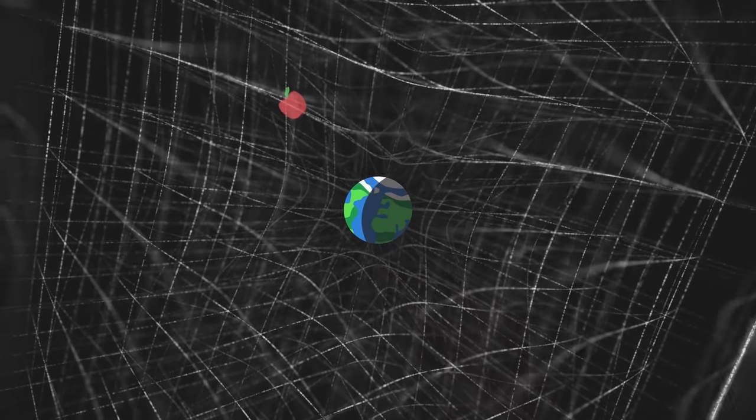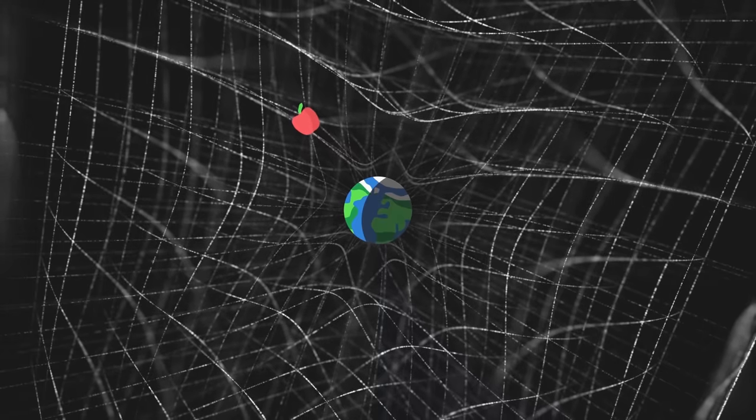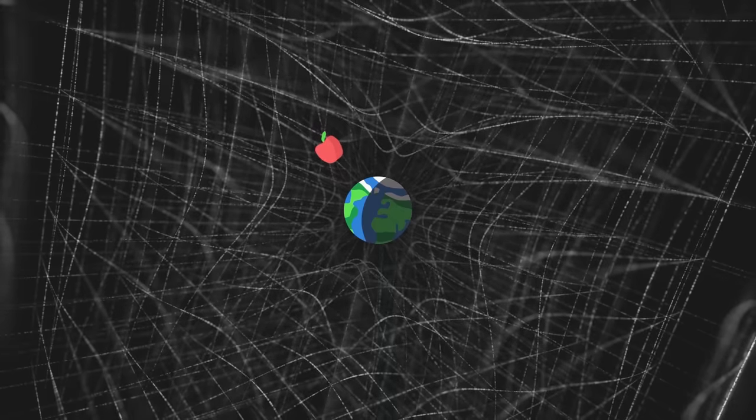Thus, if we drop the apple with no initial velocity, as no force acts upon it, it will remain motionless relative to the grid. But as the grid contracts, the apple will fall.